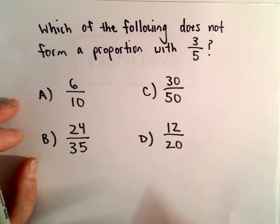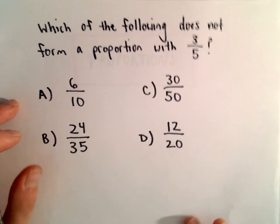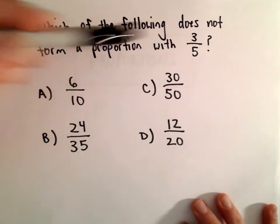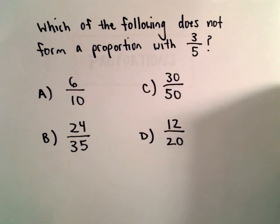So we have four different choices here. All you basically have to do in this case is think what fractions would be equivalent to the fraction 3 divided by 5.